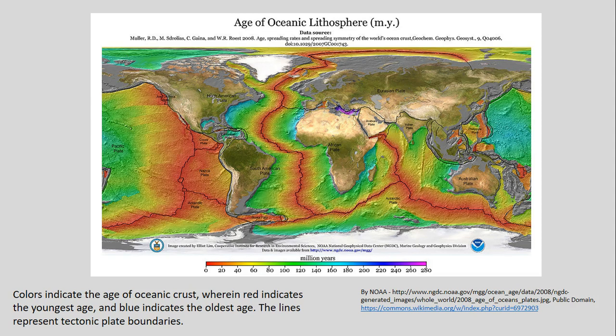Moving forward to the more geographic sense: the Earth is about 4.6 billion years old, but when we look at the ages of most rocks on the surface of ocean floors, we find quite interesting patterns. These colors indicate different ages of oceanic crust, and we can see an almost odd system — a network of very young crust, only 0 to 20 million years old, at certain boundaries.